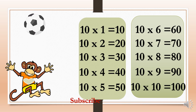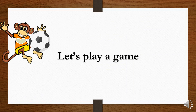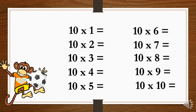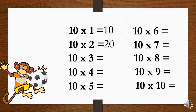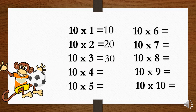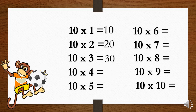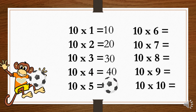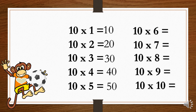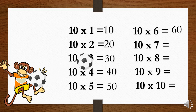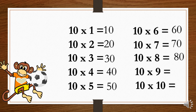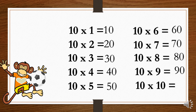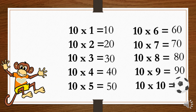Let's play a game. 10×1=10. 10×2=20. 10×3=30. 10×4=40. 10×5=50. 10×6=60. 10×7=70. 10×8=80. 10×9=90. 10×10=100.